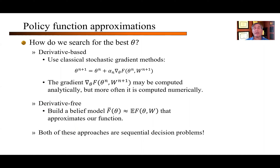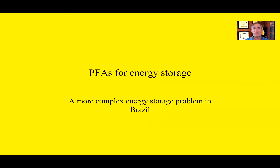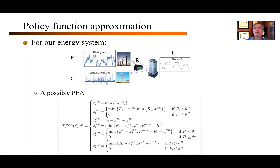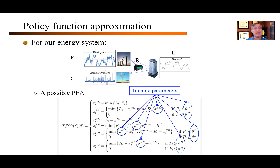Or we can do derivative-free, which simply means I do one simulation and use that to update a statistical estimate — some people call it a response surface. Both of these algorithmic strategies are themselves sequential decision problems, so you never stop learning. A more complex problem: I had a PhD student from Brazil working in my lab who had a very similar problem. He made up a series of formulas that he thought captured the right behavior, but the price of simplicity is tunable parameters, and he had a bunch of them. He would do a stochastic search to learn the best values of these parameters, and it worked quite well.